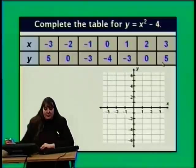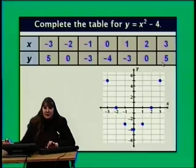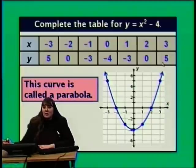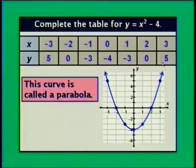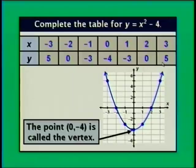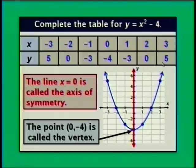Let's take a look at the graph. Starting with the seven points we found and connecting them with a curve — remember, this curve is called a parabola. The point (0, negative 4) is called the vertex. And the line x equals 0, which happens to be the y-axis, is called the axis of symmetry. What do we mean by the axis of symmetry? Let's look at some pairs of points.